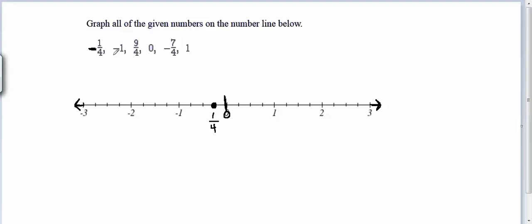The next value we need to graph is negative 1. That number is already labeled for us on the number line, so we can go ahead and just draw a circle where it's located.